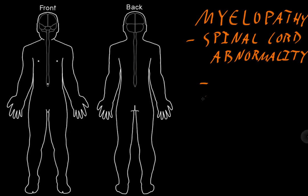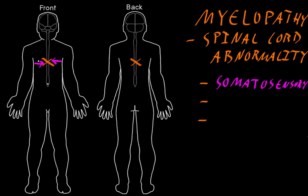So let me write a little bit of that out — the kinds of abnormalities we can have. If we have a lesion of the spinal cord, an area of abnormality maybe about halfway up, that could cause somatosensory abnormalities. The pattern of that would be all the somatosensory information trying to come in at that level, in that dermatome of the affected level of the spinal cord, but it may also affect all the dermatomes below that.